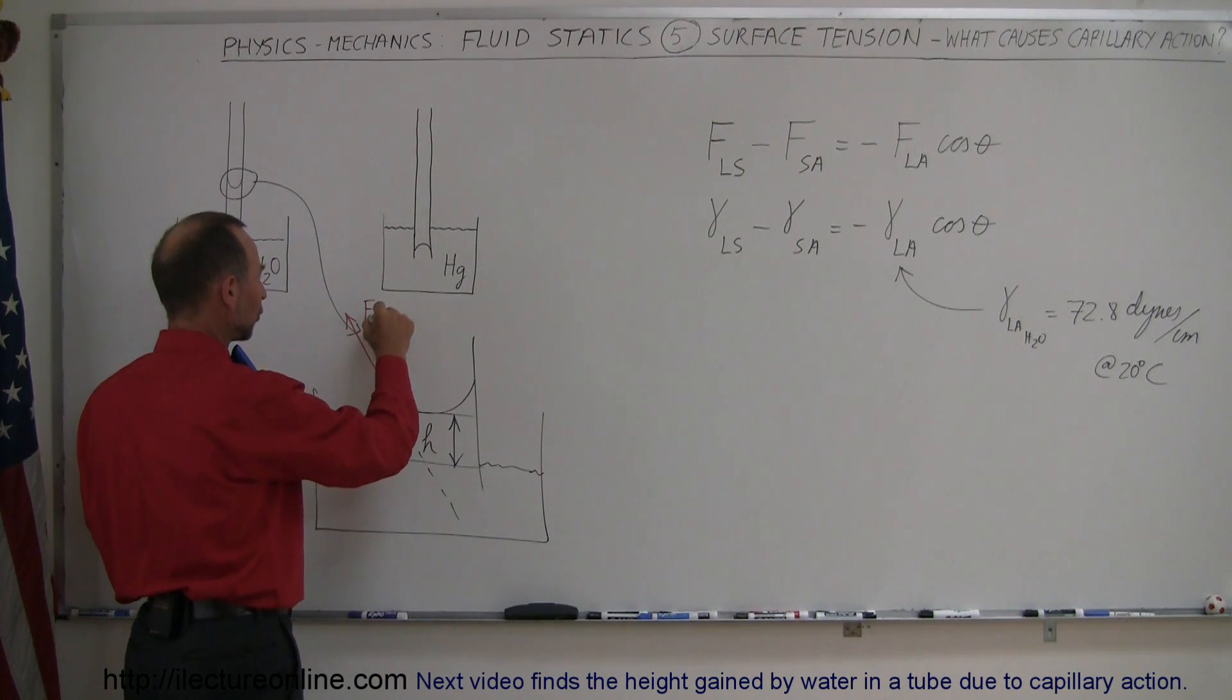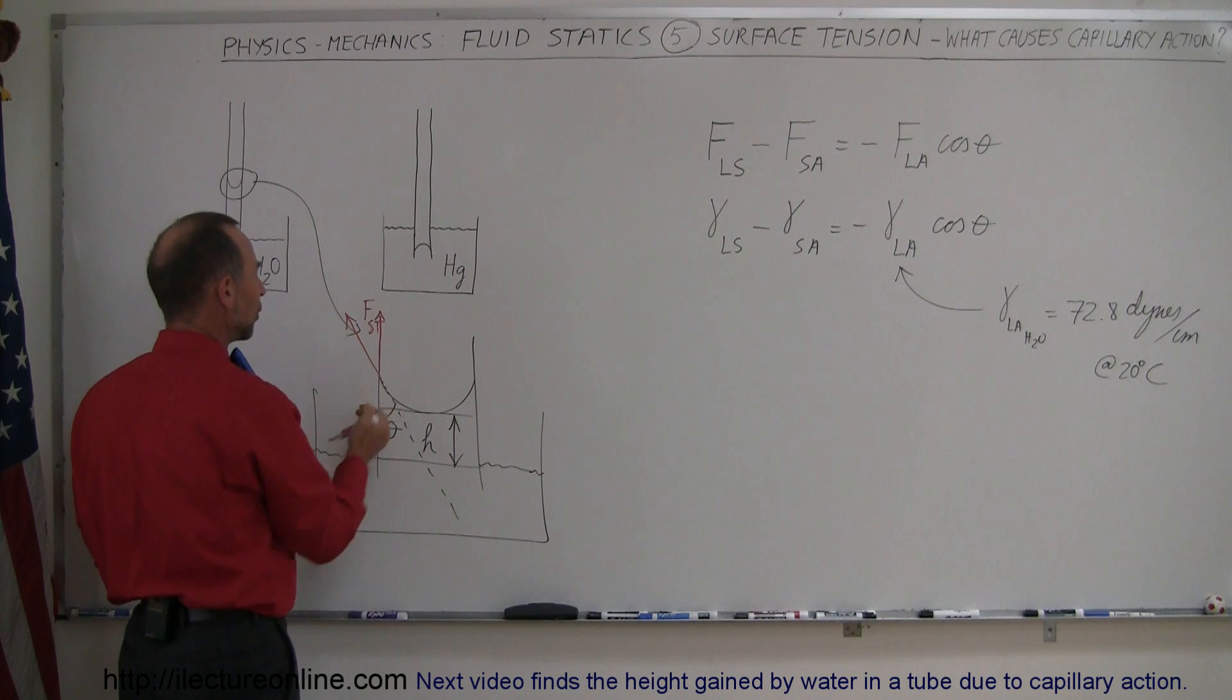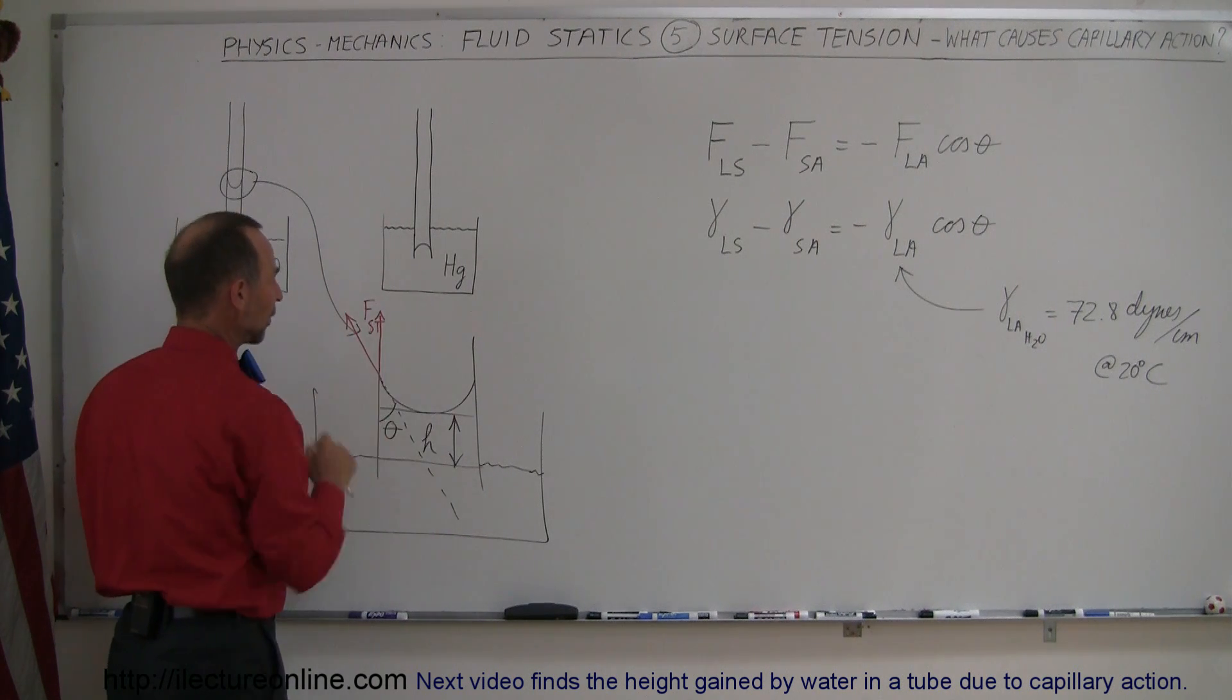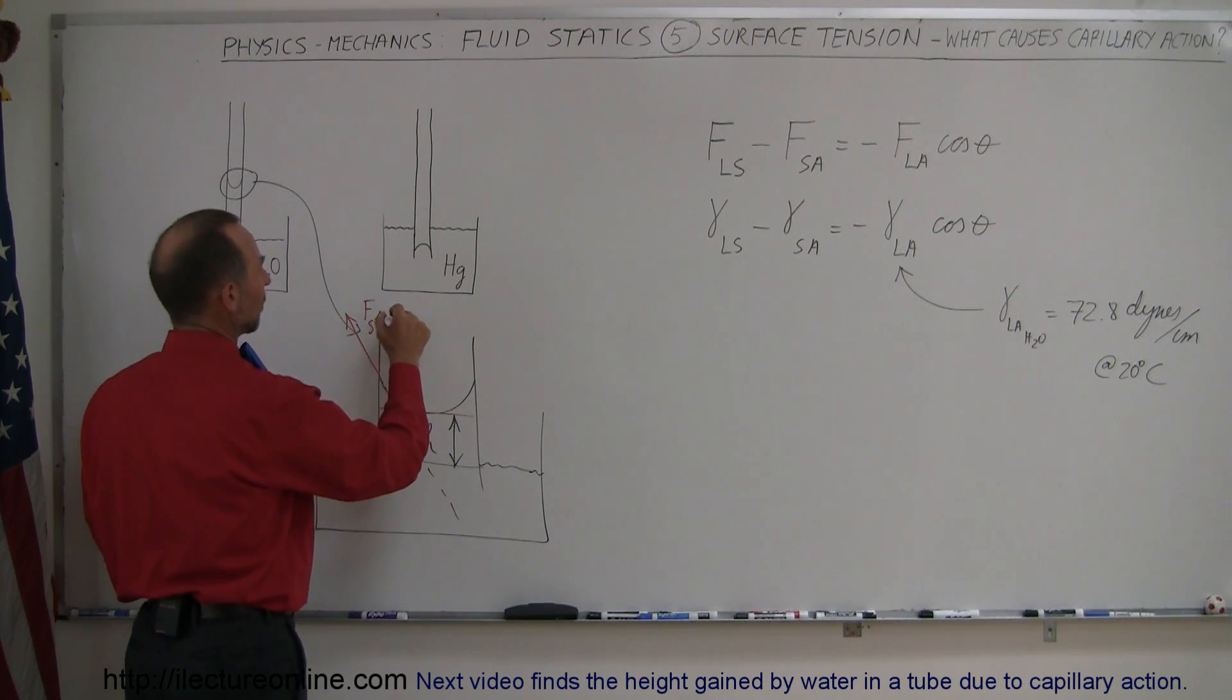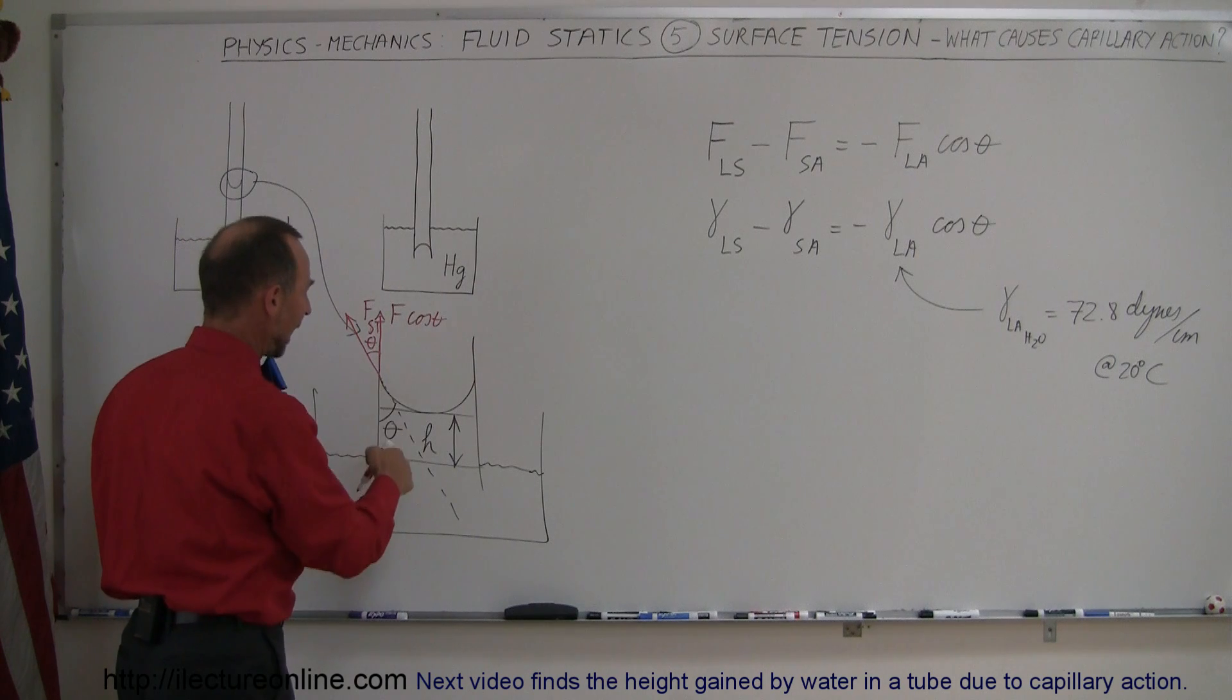Now, notice we only want to consider the component that's perpendicular to the horizontal. So then this would be what we would call the force times the cosine of theta. Theta here is the contact angle. You can look at it on either side.